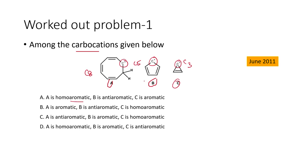These three are given as the first answer choice. In the second one, A is aromatic, B is anti-aromatic, C is homo-aromatic. In the third one, A is anti-aromatic, B is aromatic, and C is homo-aromatic. There are different possibilities given and we are going to find out which one is actually aromatic, which is homo-aromatic, and which is anti-aromatic.